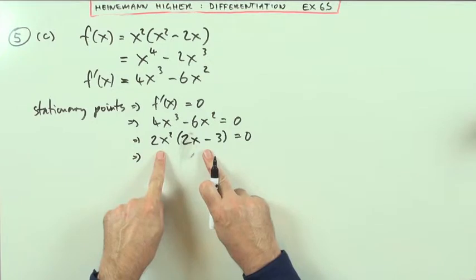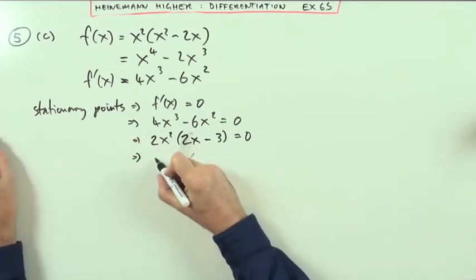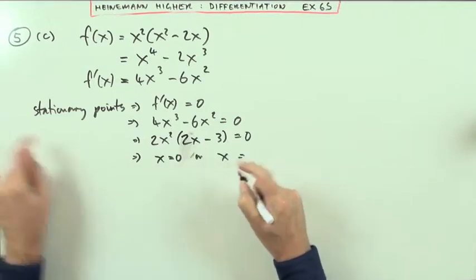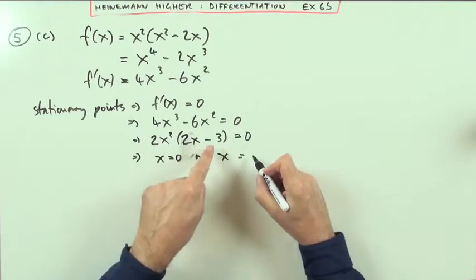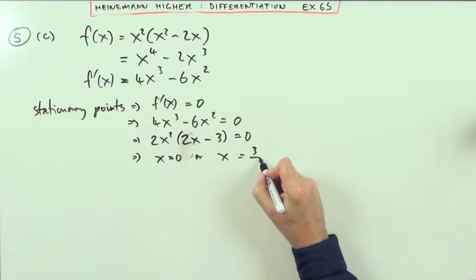Since I've got a product of factors, either one of them could be 0. So if this is 0, that means the x must be 0. Or if this is 0, then the x would have to be 3 divided by 2, 3 upon 2.